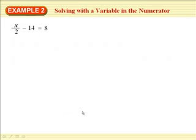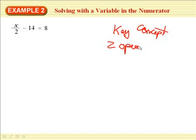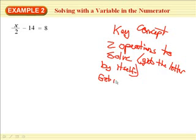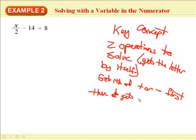So check this out. We have a key concept box. It says two operations. Some equations require two operations to solve. Here's what I need you to remember for the key concept of this. When there's two operations to solve, and that means get the letter by itself. You have to get rid of what's added or subtracted first. Then get rid of multiplying and or dividing.